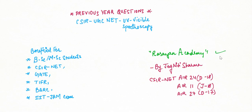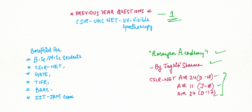Hello everyone, welcome to Rasayan Academy. My name is Jagriti Sharma and I have qualified CSIR NET thrice. These are my ranks in the December 2018 exam, June 2018 exam, and December 2017 exam. In this series on UV-visible spectroscopy, I'm adding previous year questions. This is my first video for that, and I hope it will be beneficial for BSc and MSc students, as well as those preparing for competitive exams like CSIR NET, GATE Chemistry, TIFR, BARC, and IIT JAM.